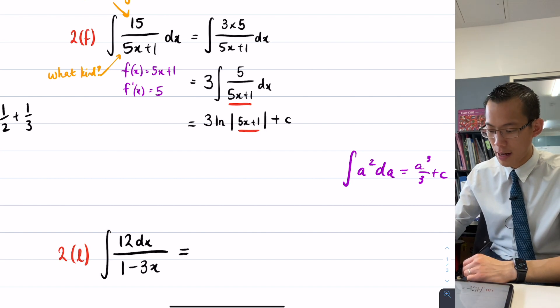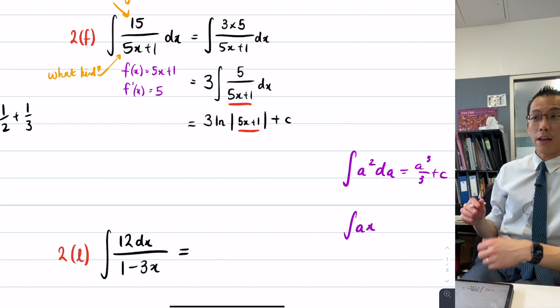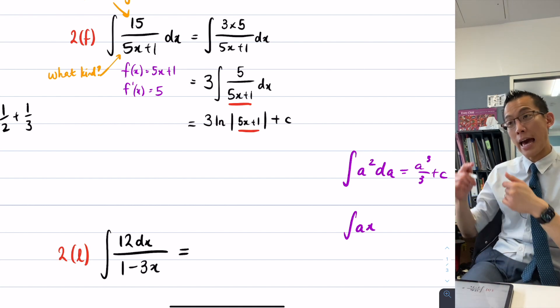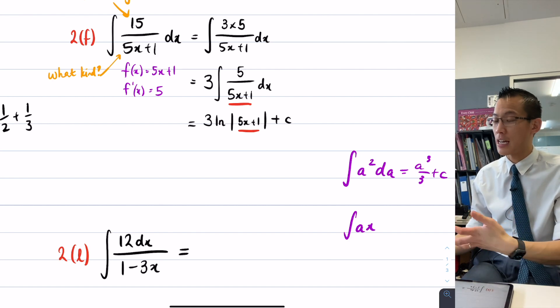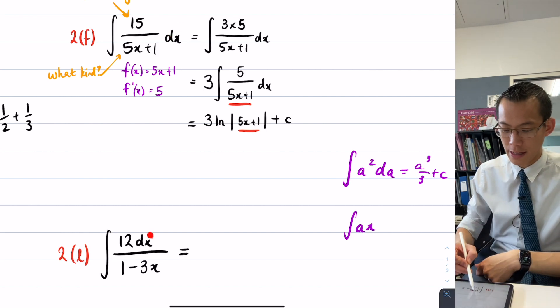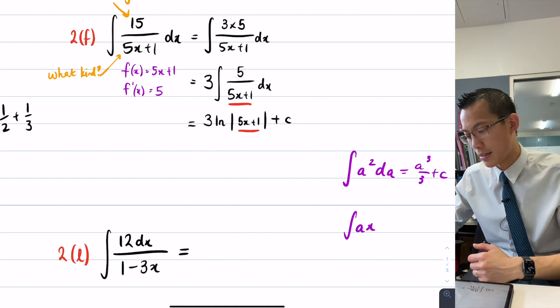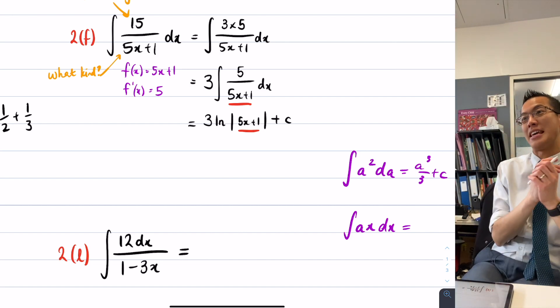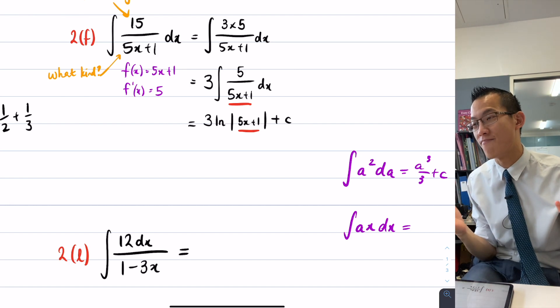Now what if you saw something like the integral of ax? Now if you don't have any other information, is it the a that's going to increase in power and divide, or is it the x? So that's why you need extra information to actually tell you that. For instance, I might say, actually, it's the x I want you to pay attention to. In which case, we just treat the a as if it were like 5 or 3.